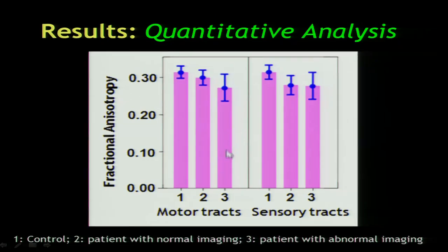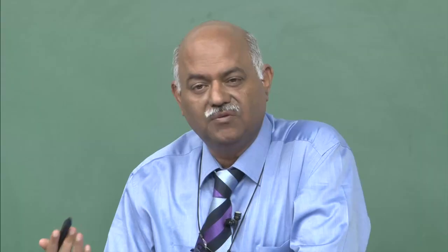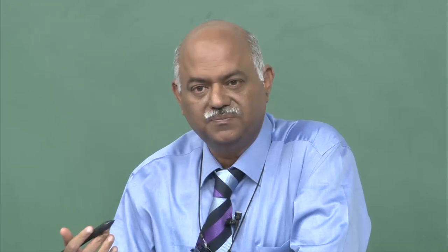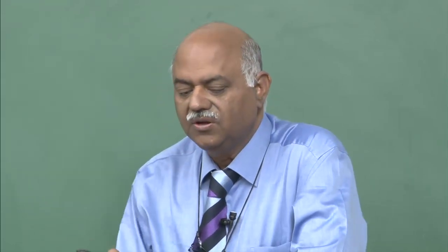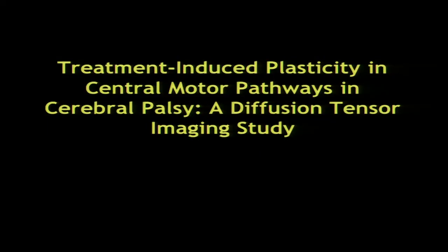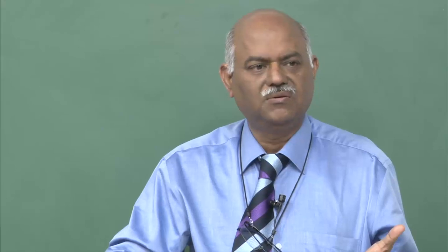We could actually classify the grade of CP by tractography alone — sensory and motor involvement together — correlating with the GMFM score grade of weakness. This is important for treatment-induced plasticity. When we started treating children with botox and physiotherapy — botox being an expensive chemical — not everyone can afford it in this country, though they may sell their house for even a small improvement in function.